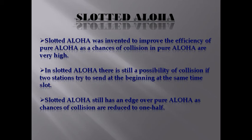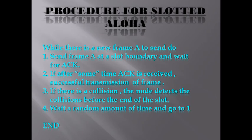Slotted ALOHA was invented to improve the efficiency of Pure ALOHA, as the chances of collision in Pure ALOHA are very high. In Slotted ALOHA there is still a possibility of collision if two stations try to send at the beginning of the same time slot, but chances of collision are reduced to one half. Procedure for Slotted ALOHA: when there is a new frame A to send, transmit frame A at the slot boundary and wait for an acknowledgement. If ACK is received, transmission is successful. If there is a collision, the node detects it before the end of the slot, waits a random amount of time, and goes back to step one.